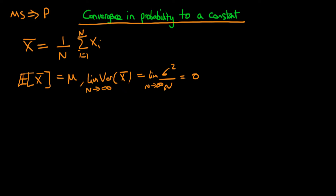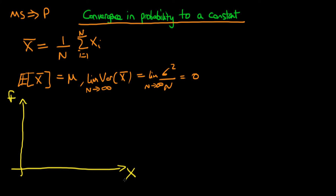So what does this actually mean graphically? Let's draw a graph to illustrate what's going on. The idea is that we are comparing the sampling distribution, with the vertical axis representing frequency and the horizontal axis representing the values which our random variable x̄ takes on, as n gets bigger.